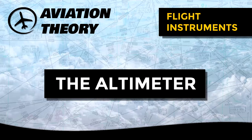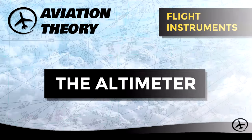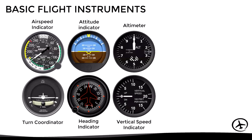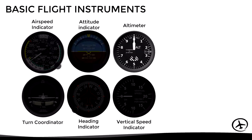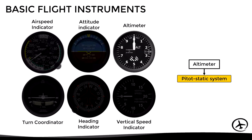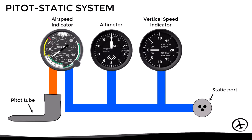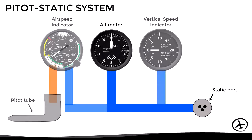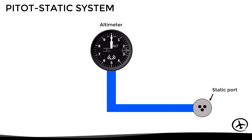Today we will talk about the altimeter. The altimeter is one of the basic flight instruments and it is connected to the pitot-static system, which we discussed in a previous video. Here we have a simple schematic of a typical pitot-static system. As we can see, the altimeter is connected only to the static port, which means that it receives static pressure information only.